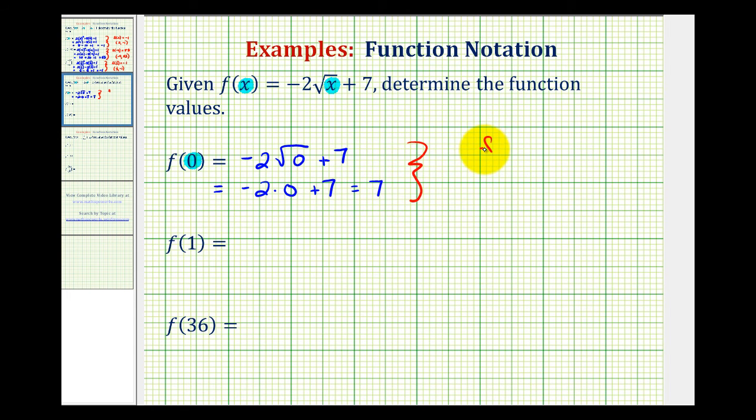So f of 0 equals 7, which means for this function, when the input is 0, the output is positive 7. But graphically, this means that when the x-coordinate is 0, the y-coordinate would be 7, and therefore, this would be a point on the graph of the given function.